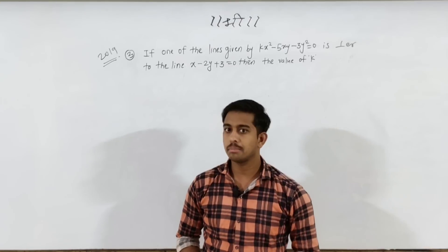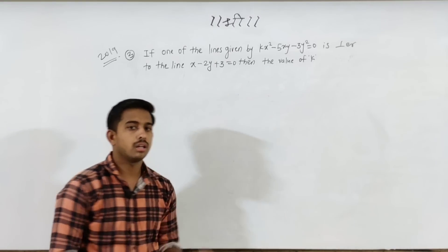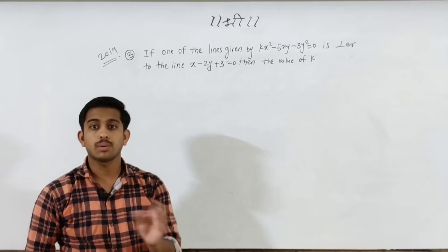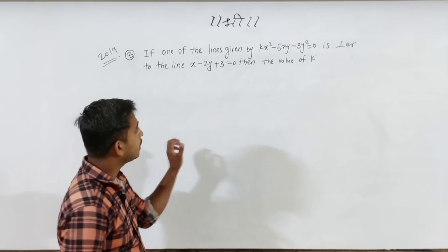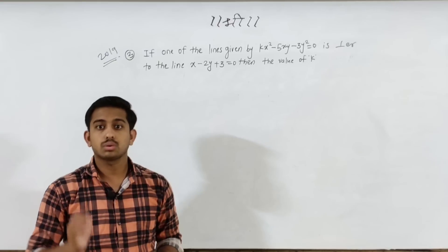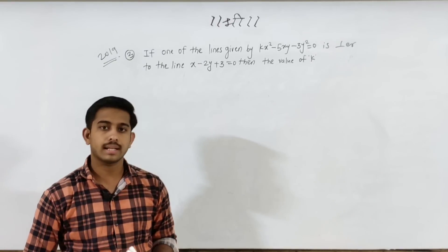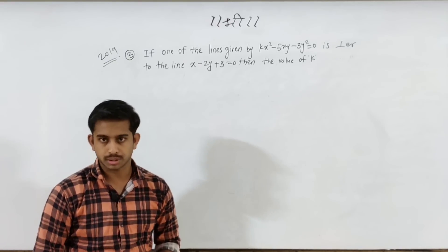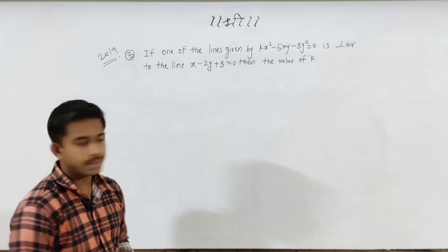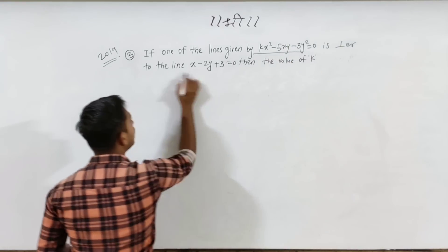Now the third example. This is related to finding the equation when one of the lines is given. We have to use the homogeneous equation and one of the solutions, where one of the lines satisfies the equation.